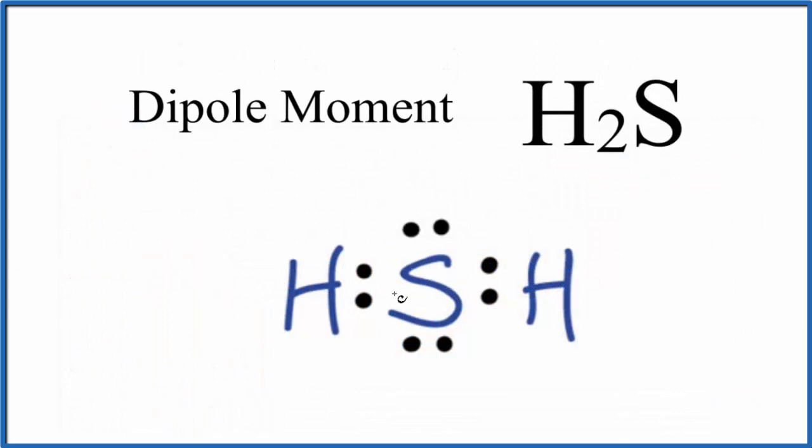What that means is that since the sulfur is more electronegative, the bonding electrons here, the electrons in these bonds here, they'll spend a little bit more time with the sulfur. That'll make it more negative. The hydrogens will be a little more positive.